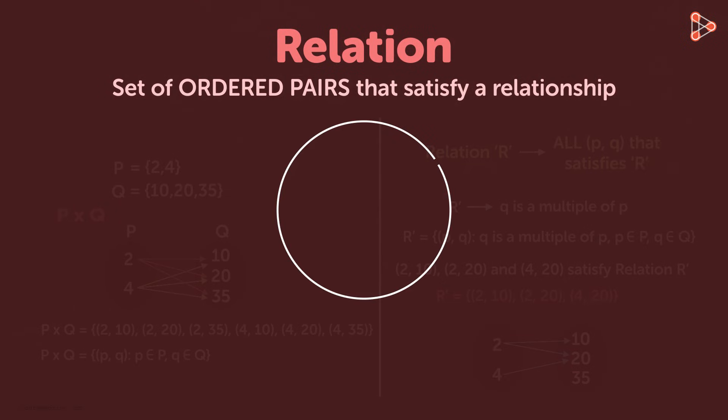Let's say this entire circle represents the set of elements in the Cartesian product P cross Q. In that case, set R dash will be a part of it. We can say that set R dash is a subset of the Cartesian product P cross Q.